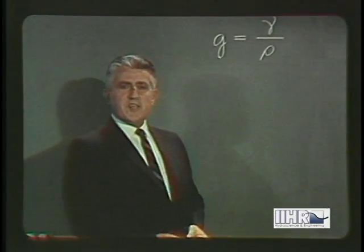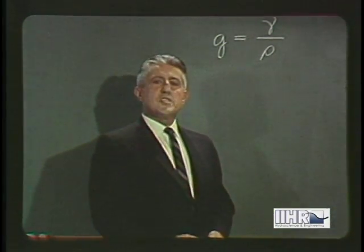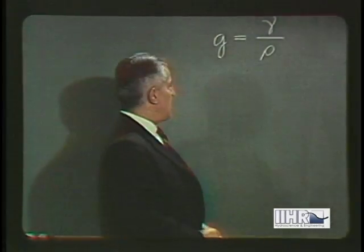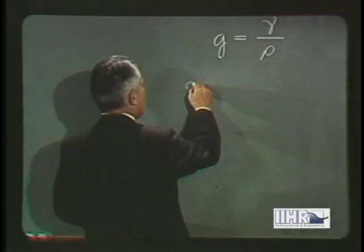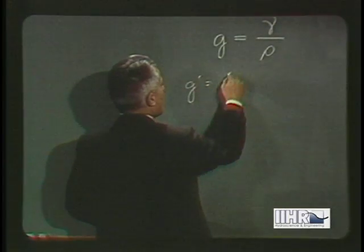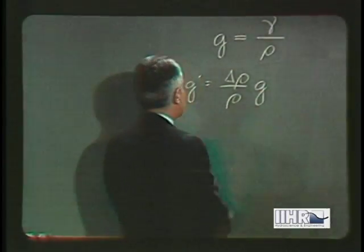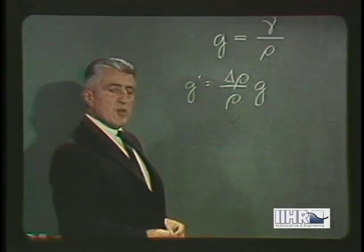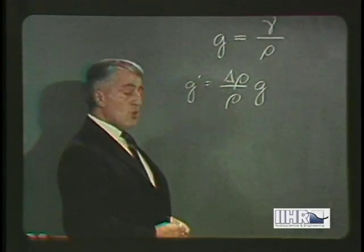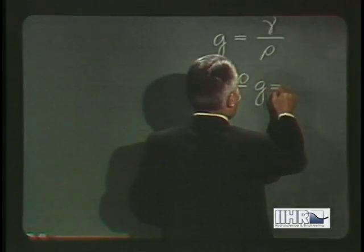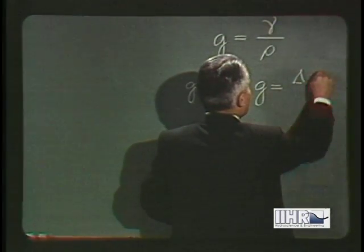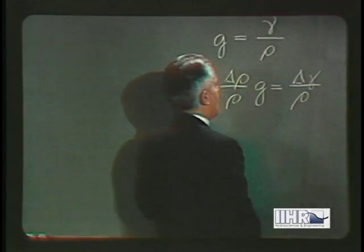What was actually different between the two flows was the effective acceleration of gravity, which we will call g prime. g prime is seen to be proportional to the relative difference in density, or more significantly, to be equal to the differential weight per unit mass.